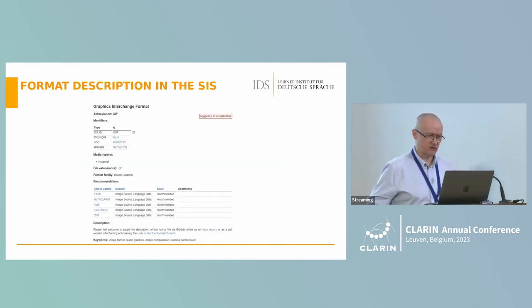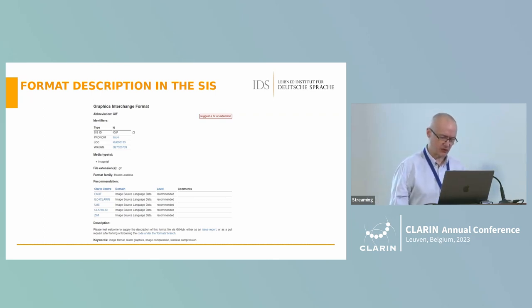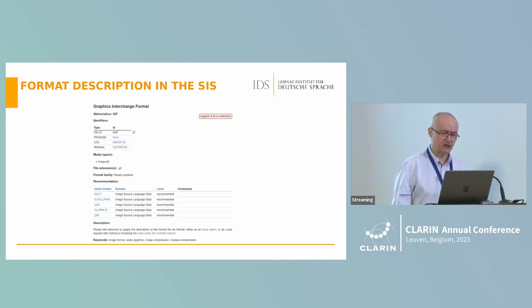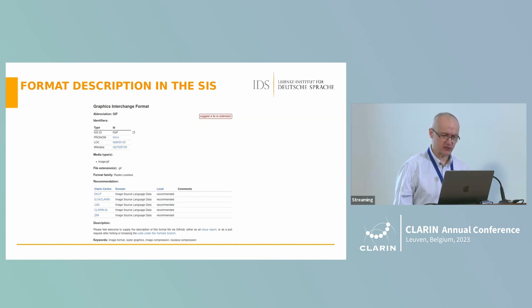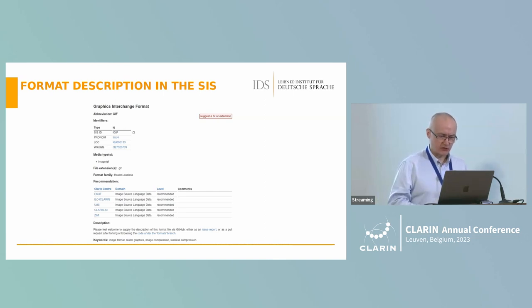Here is an example page of information about a single format. Going from top down you can see references to existing repositories of information such as Pronom, Library of Congress, and Wikidata. There is also information about media types and file extensions, and a glimpse at the recommendations by particular centers.